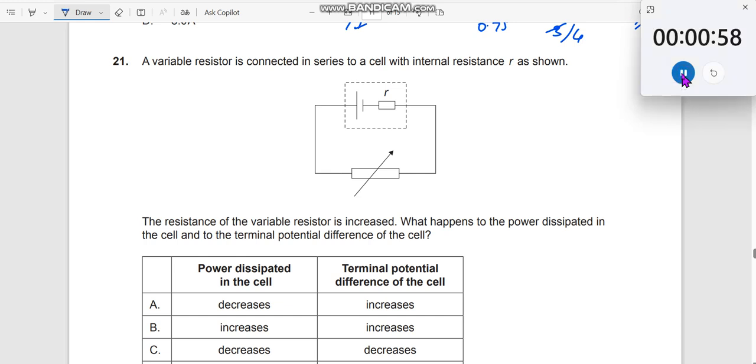Question number 21. A variable resistor is connected in series to a cell with an internal resistance. R is here. This is your, let me say this is your EMF E.